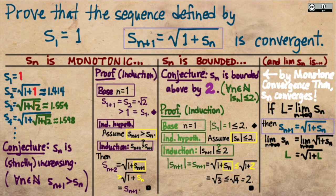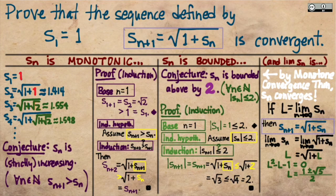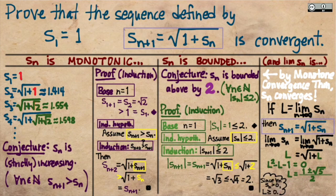Now we just do some algebra: squaring both sides and collecting all terms to the left, we find that L satisfies the quadratic equation L² − L − 1 = 0. Applying the quadratic formula gives L = (1 ± √5) / 2. Since all terms of the sequence are positive, the limit must be greater than or equal to 0, and only the solution with the plus sign satisfies that. So the limit of the sequence is (1 + √5) / 2 — the golden ratio — approximately 1.618, which comports with the decimal approximations we saw for the first few terms.